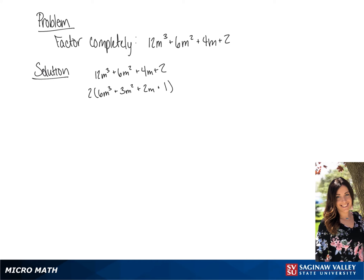Now we are going to further group these into two terms. We're going to factor out the first term, which is 6m cubed plus 3m squared. We can factor out a 3m squared, giving us 2m plus 1.